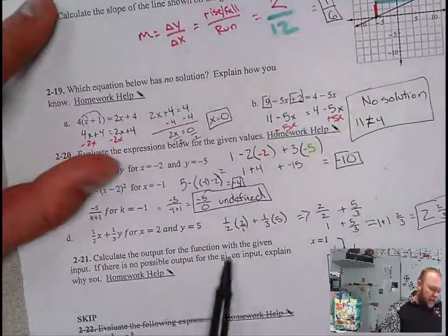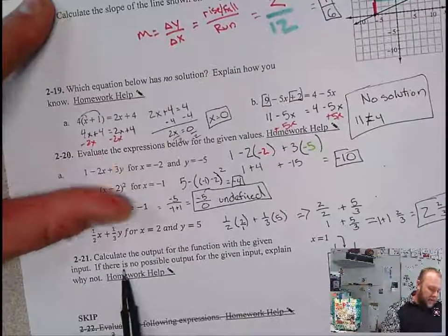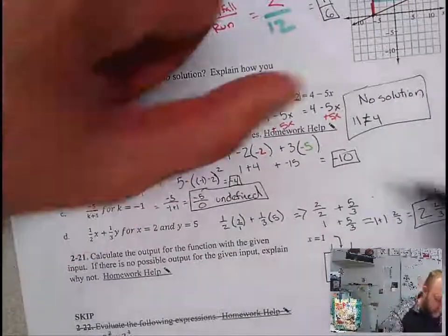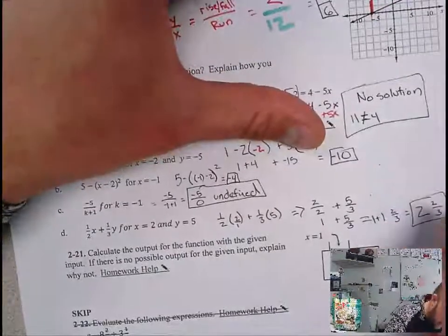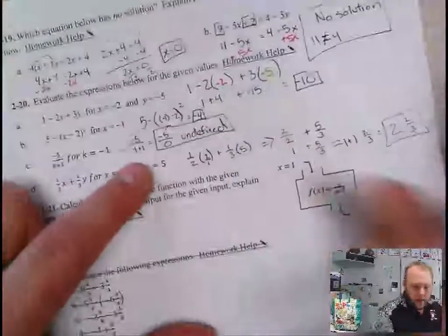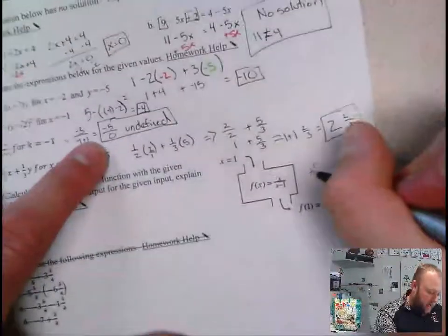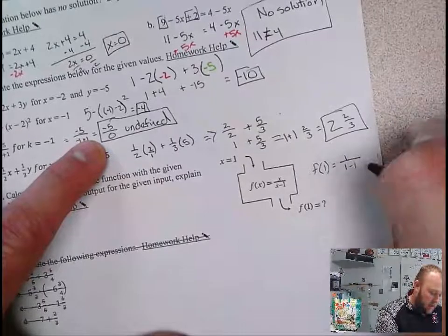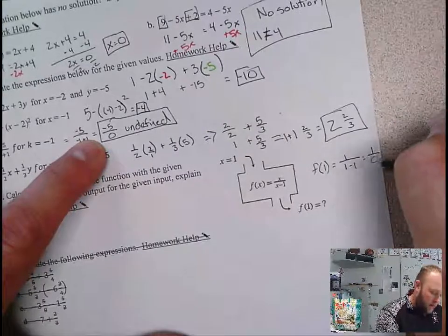Calculate the output of the function. If there's no possible output for the given input, explain why not. Well, if I input one here for my input of this function, I would have f(1) = 1/(1 - 1) or 1/0, which is undefined.